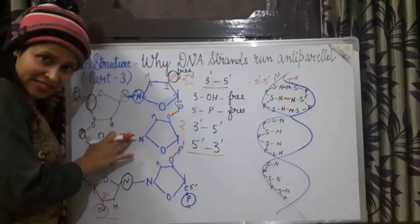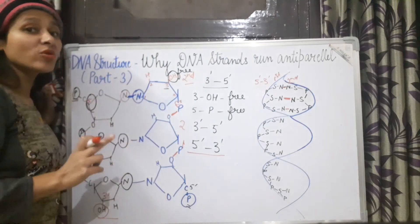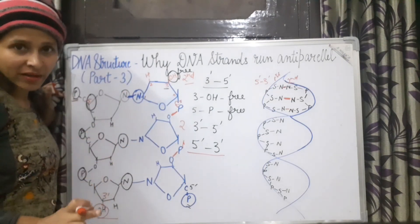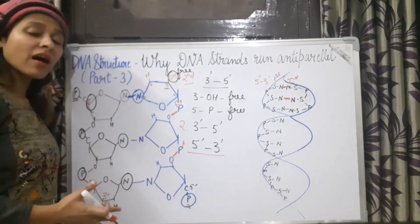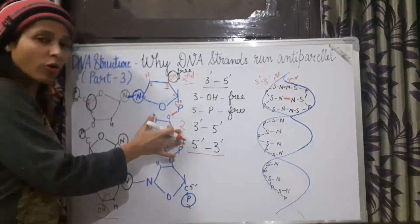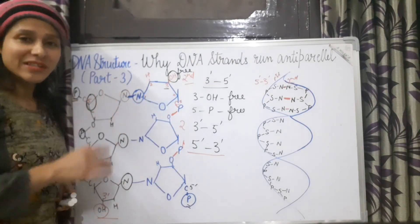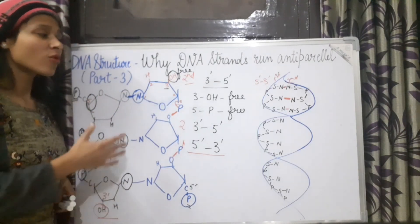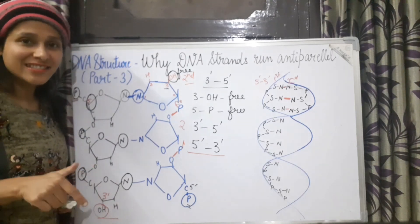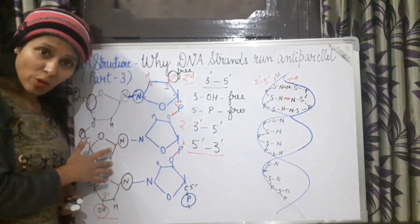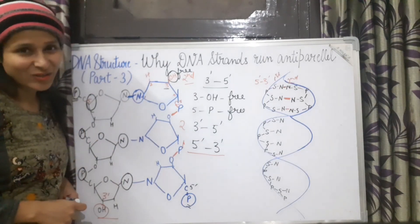I hope you have understood it very well. Now you can easily answer the question: why do DNA strands run anti-parallel, and why are they opposite to each other? If you understood the concept, please let me know in the comment section. If you have any doubt, you can join me on Instagram — the link is in the description box. If you liked this topic, please hit the like button and subscribe to my channel. Thank you.